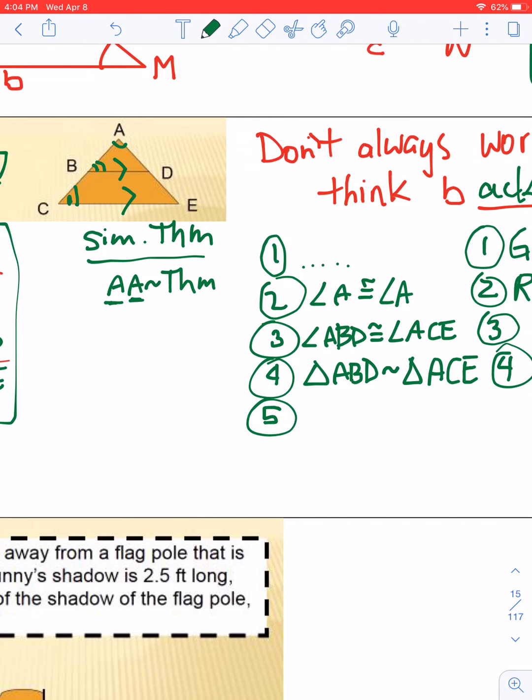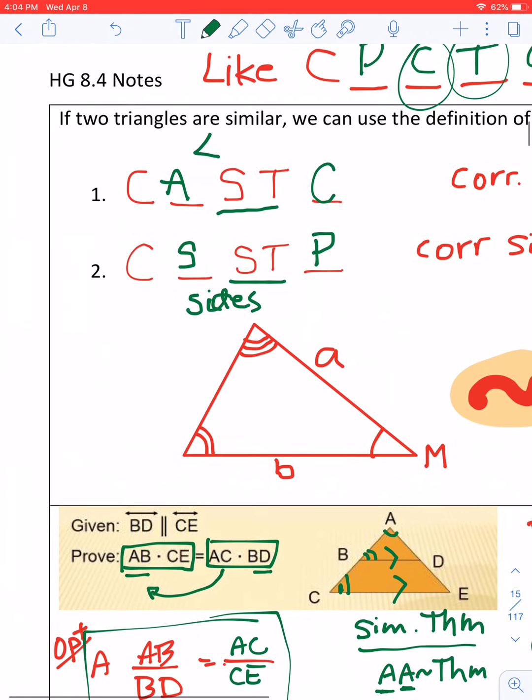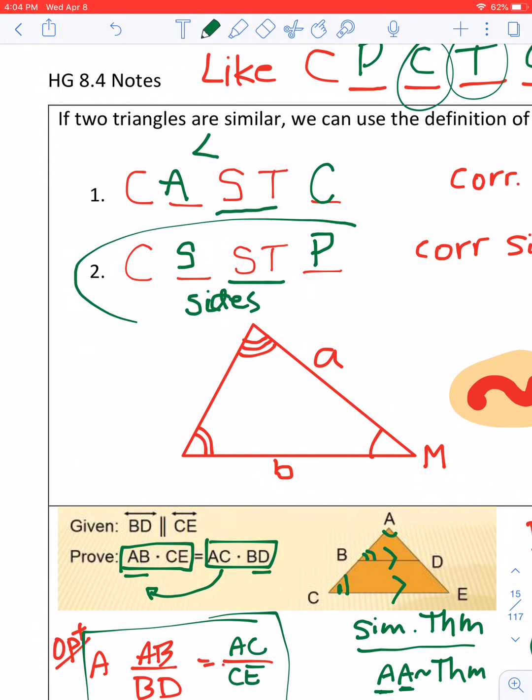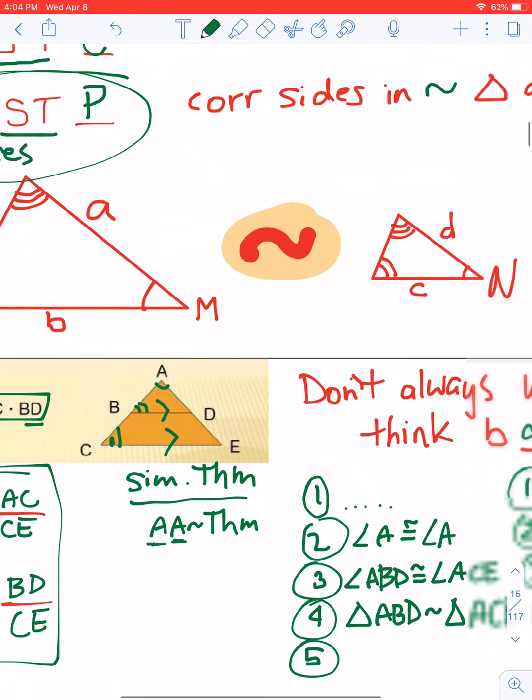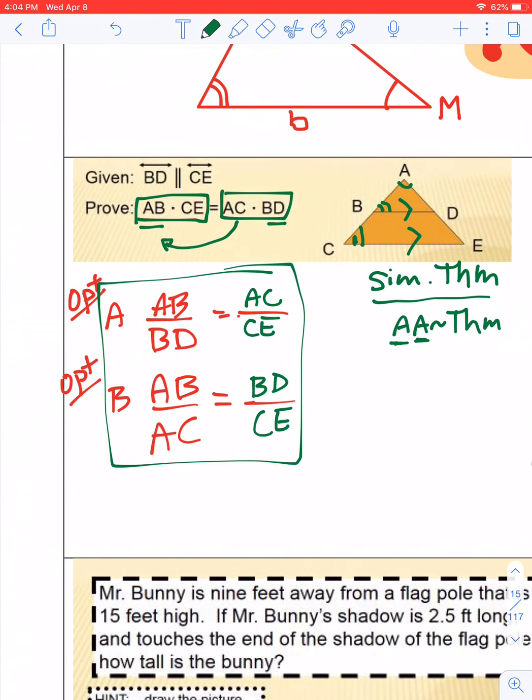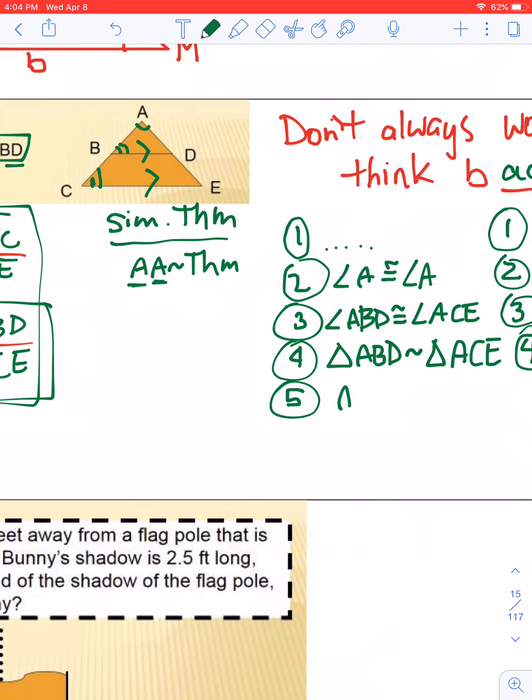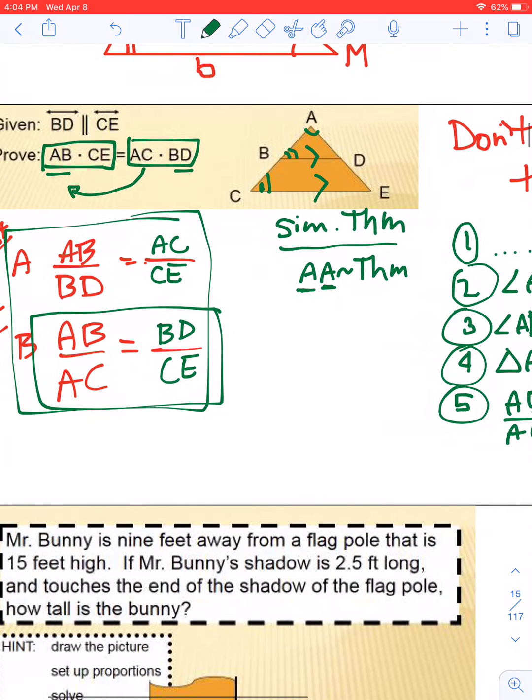And this is because we have the angle-angle similarity theorem. Line five. Because the triangles are now similar, we can now go back and use and set up the sides. Right? Of course, I mean sides of similar triangles are proportional. So I'm now going to set up this one here. Okay? AB over AC...